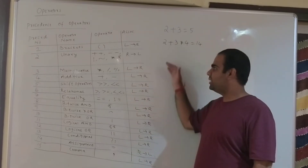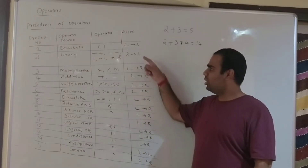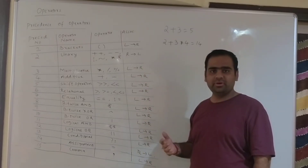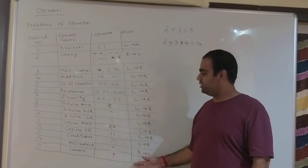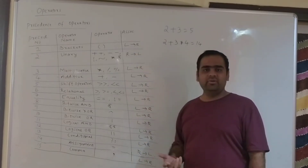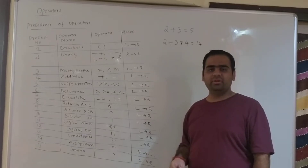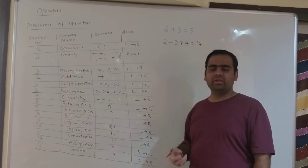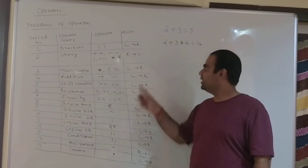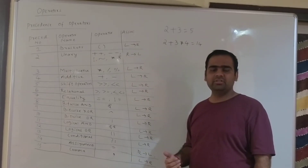Similarly, in programming language, we have 15 types of operators. Precedence number 1 is the highest precedence and 15 is the lowest precedence. There is something called associativity — if there are two operators of the same precedence, associativity is used to resolve the tie. L to R means from left-hand side to right-hand side in the expression; R to L means right-hand side to left-hand side.